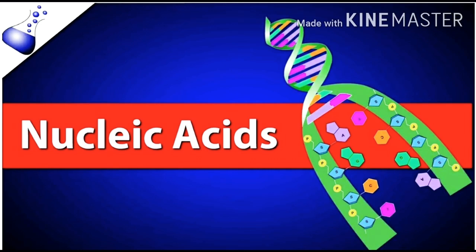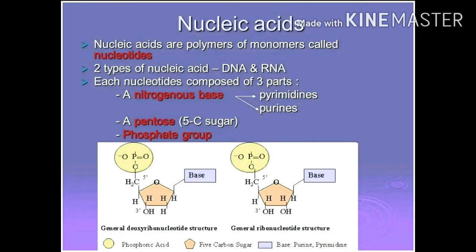Nucleic acids are biomolecules. They are formed by the polymerization of nucleotides, so nucleic acids are macro biomolecules made of nucleotides — they are polymers of nucleotides. These nucleic acids are of two types: the first one is DNA, that is deoxyribonucleic acid, and the second one is RNA, that is ribonucleic acid.